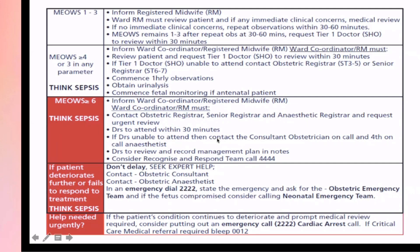If the MEOWS score is six or more, the registered midwife must contact the obstetric registrar (ST3 to ST5), senior registrar, and anesthetic registrar — all three — to come and review the patient urgently, attending within 30 minutes. If any of these are unable to attend, the consultant obstetrician on call and the fourth on-call anesthetist should come. If it is recognized as an emergency, contact the Recognize and Respond team on 4444.